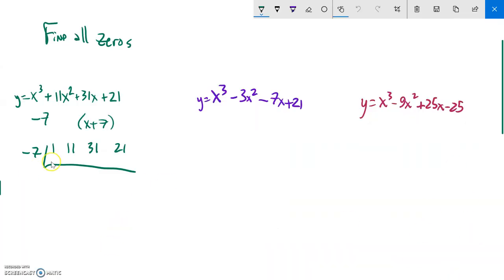As I do my synthetic division, the first term just comes down, the one, and then I multiply. Negative seven times one is negative seven. And then the rest of the steps I always just do the same thing. So add these together, that gives me a four. Negative seven times four, something you should just know, is negative 28.